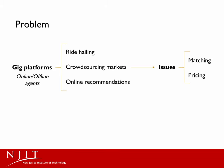The Internet era has seen the rise of the gig economy, which features digital platforms that connect dynamic arriving agents called online with static agents called offline. Some real-world examples of gig platforms include ride-hailing services, crowdsourcing markets, and online recommendations. Commonly, due to the low patience of online agents, it is highly desirable to make instant and irrevocable matching decisions.